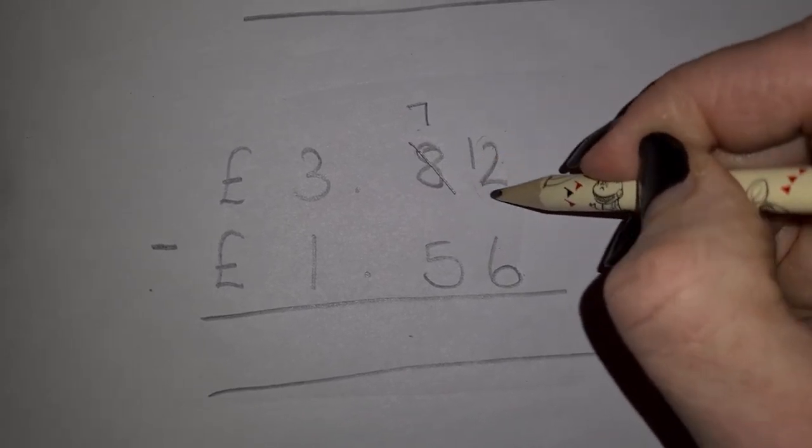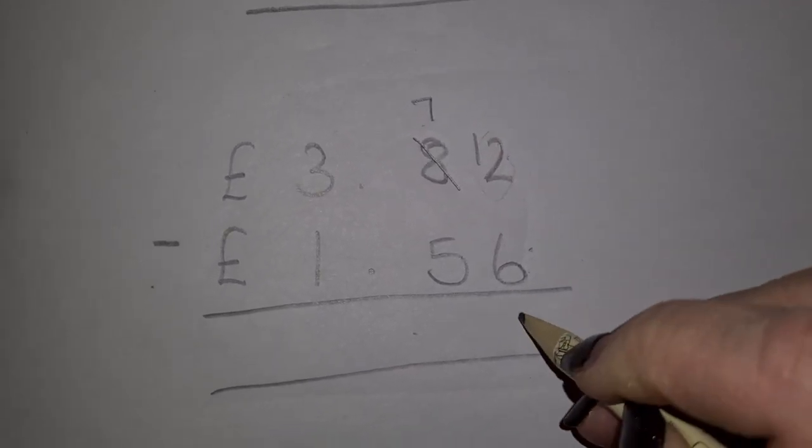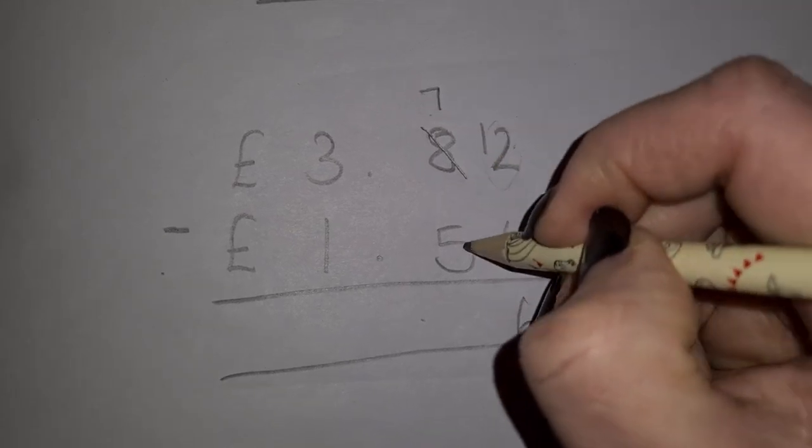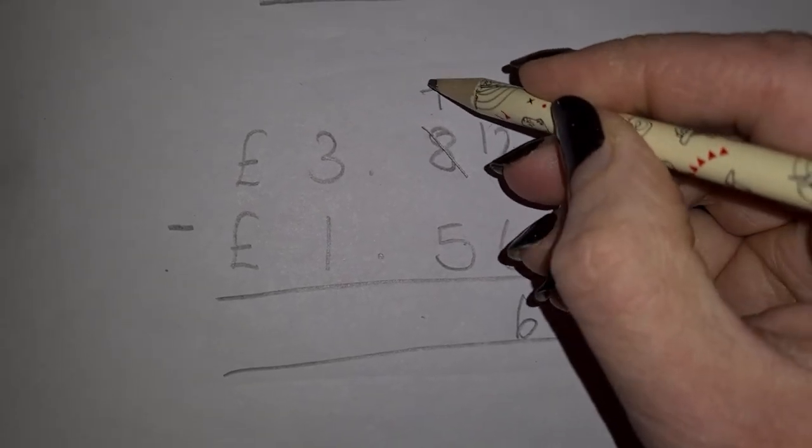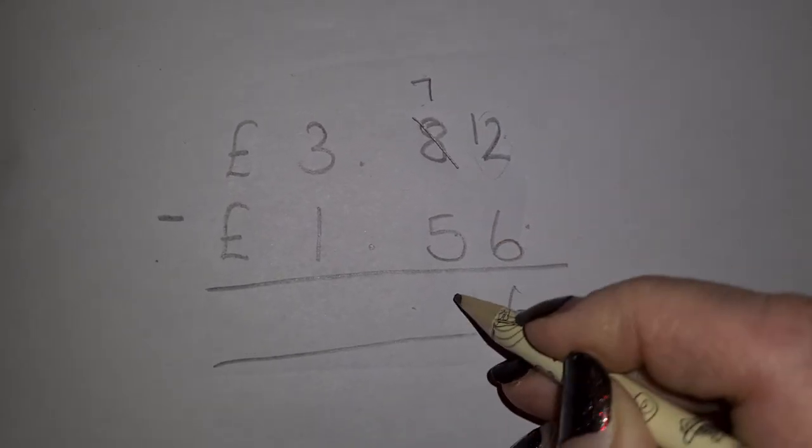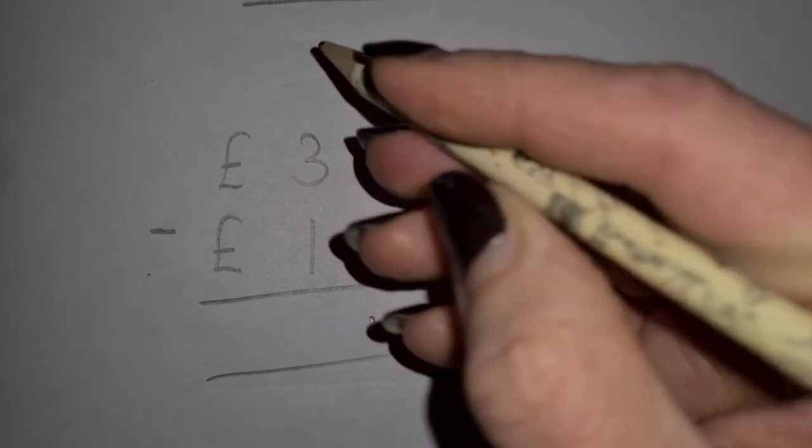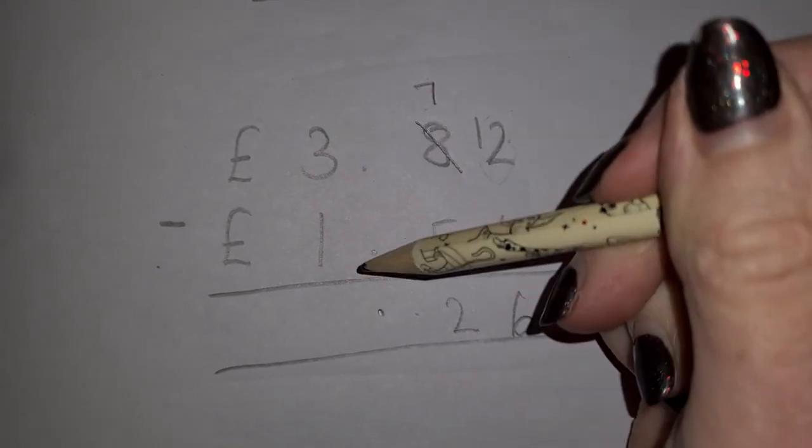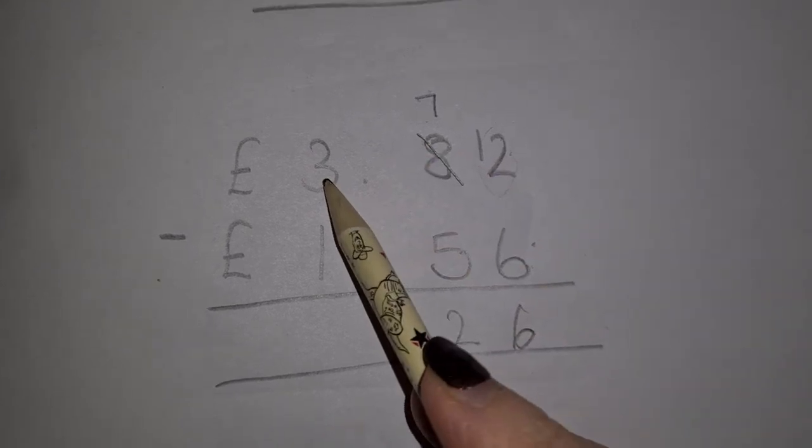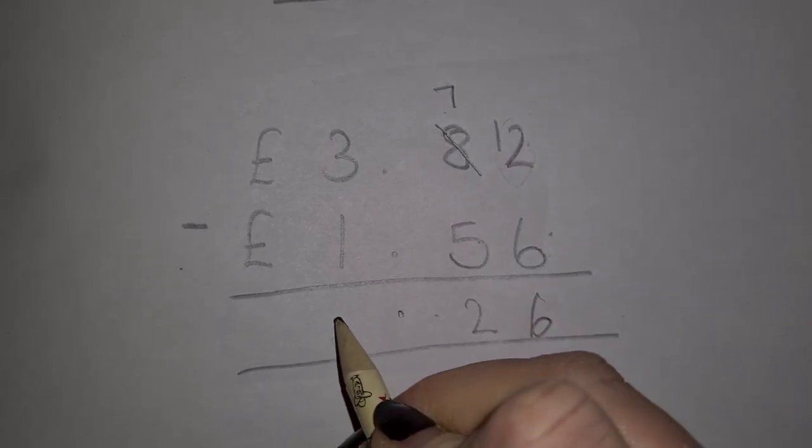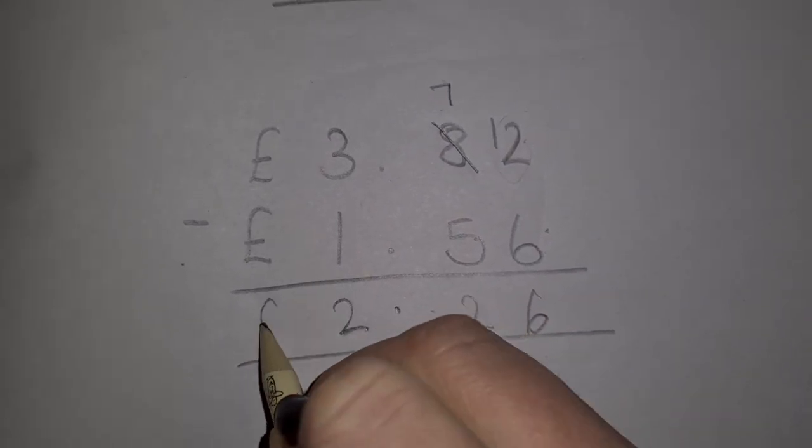Now I can do 12 take away 6, which is 6. 7 take away 5, I can still do that because 7 is bigger than the 5. That makes 2. 3 take away 1, I can do that because 3 is my biggest number there. And that makes 2.